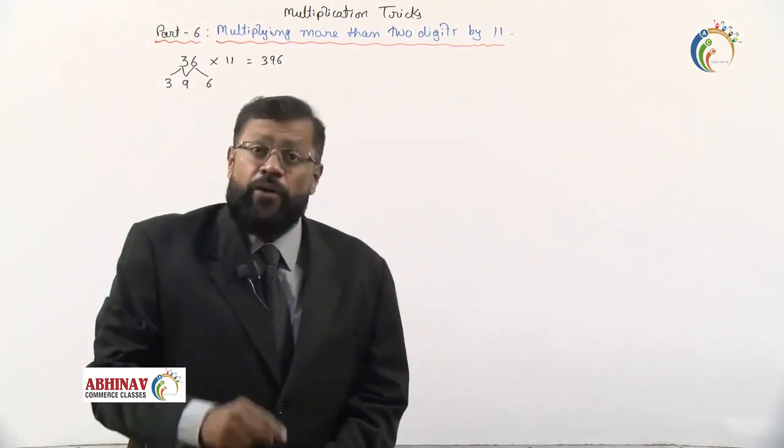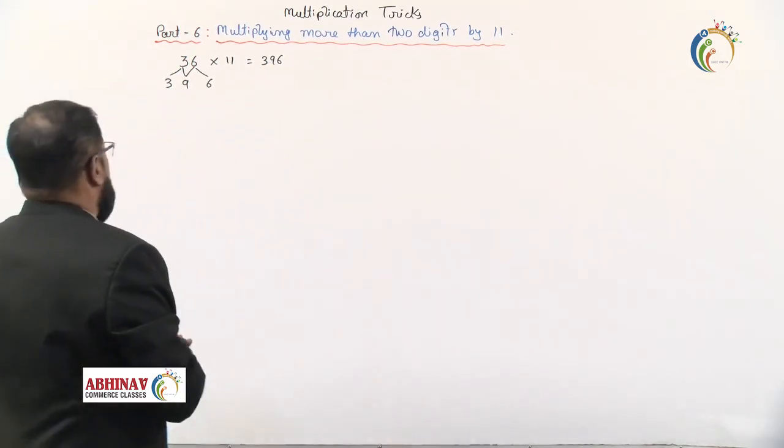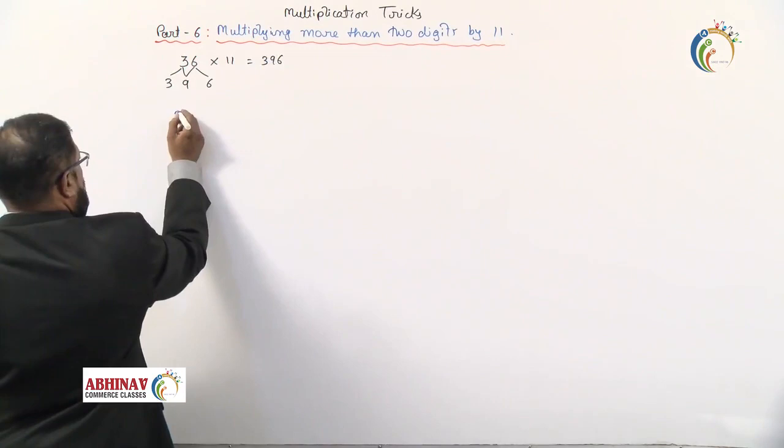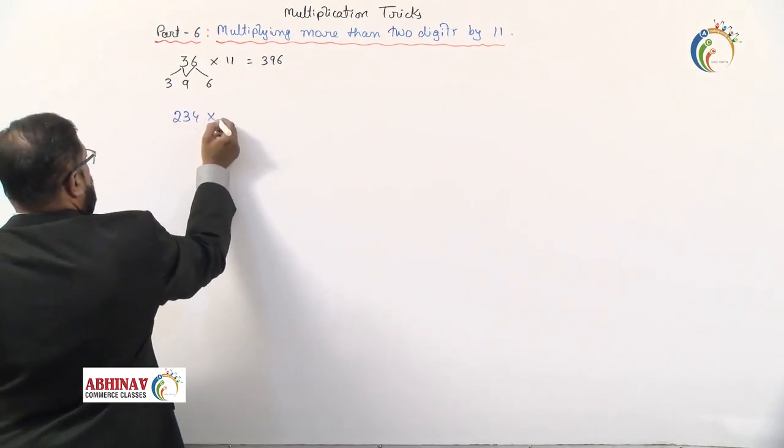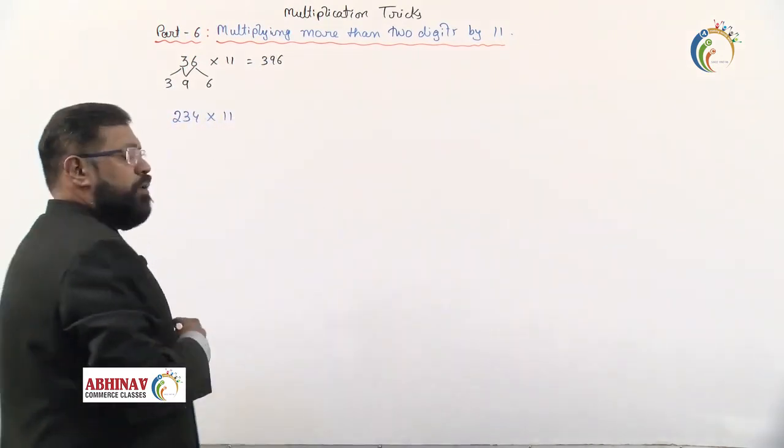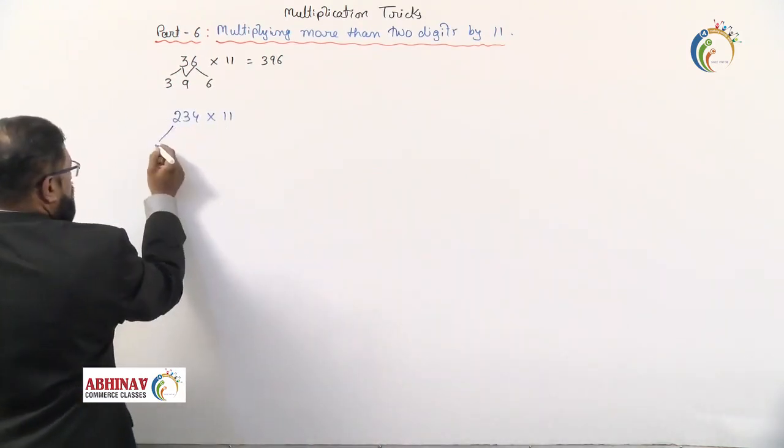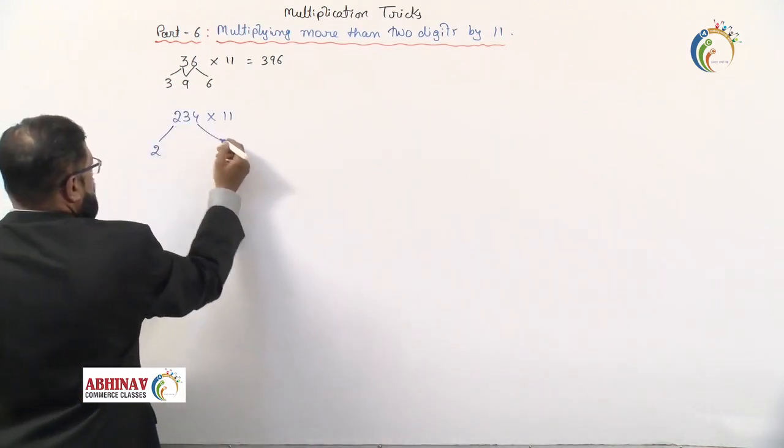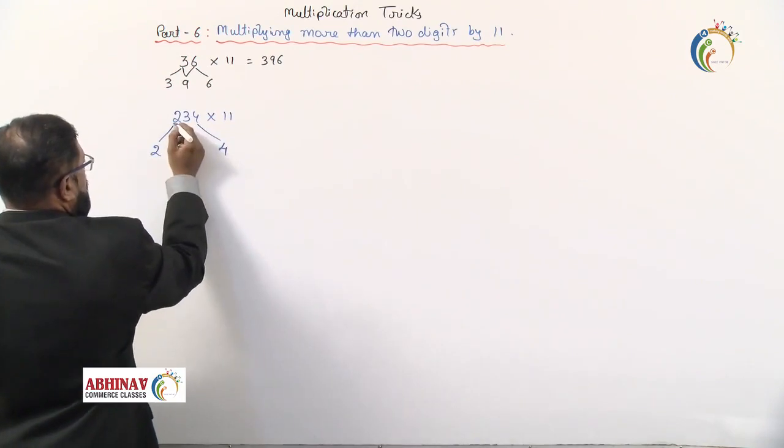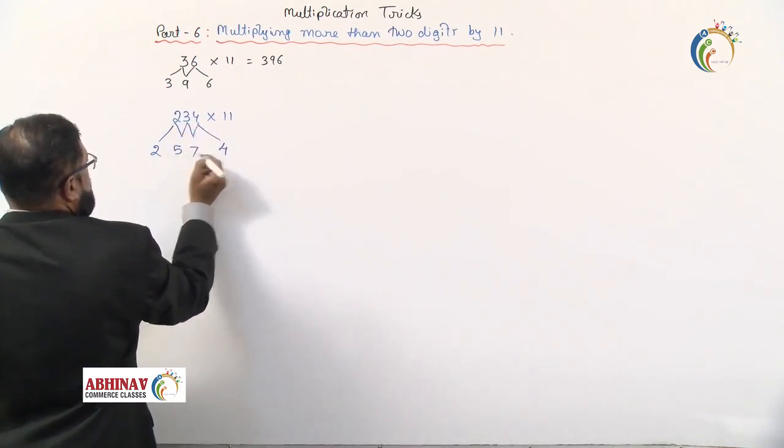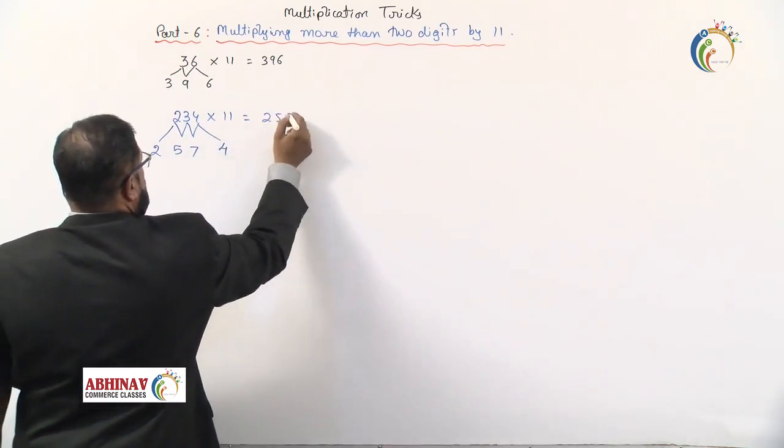Now if it's more than a two-digit number, let's see. For example, we want 234 multiplied by 11. First, write 2, then write 4. Now 2 plus 3 is 5, 3 plus 4 is 7. Answer: 2574.